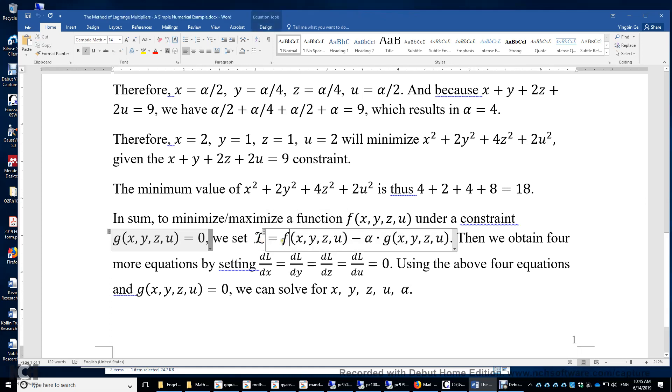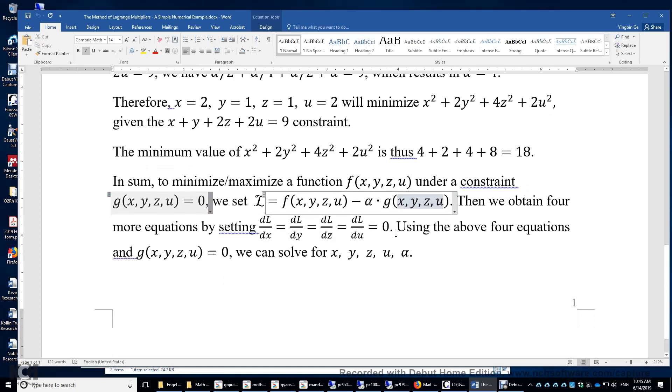we are simultaneously minimizing and maximizing this f. And also, because alpha can be any value and g is always zero, this means we are minimizing or maximizing this f under the constraint, which is this g is always equal to zero.